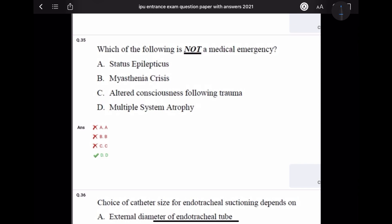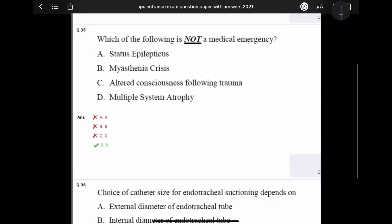Next: Which of the following is not a medical emergency? Multiple system atrophy is not a medical emergency, but altered consciousness following trauma, myasthenic crisis, and status epilepticus - severe form of epilepsy that can be lethal - are all medical emergencies. So answer is A, multiple system atrophy.